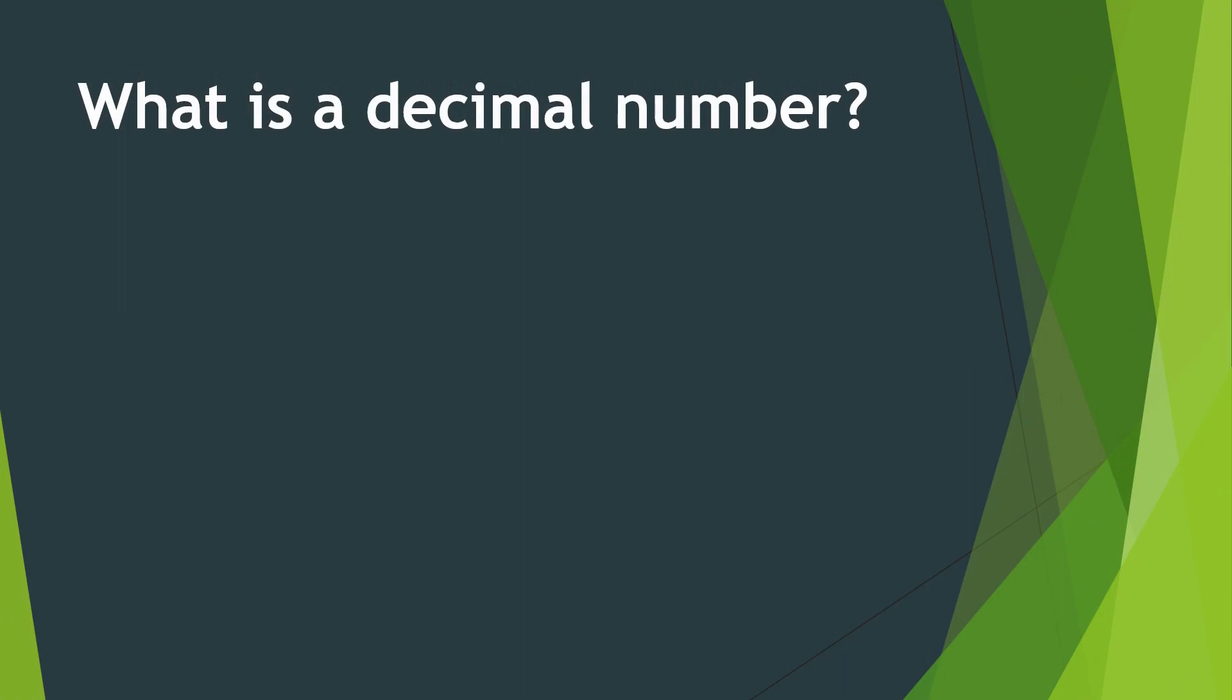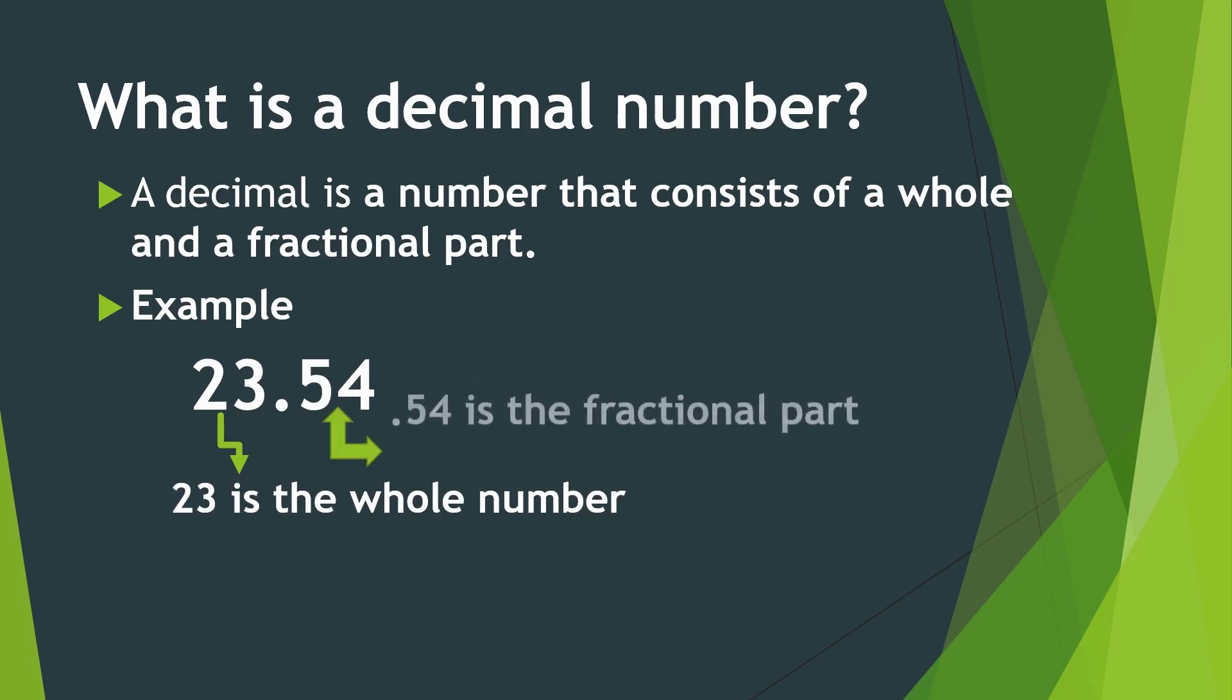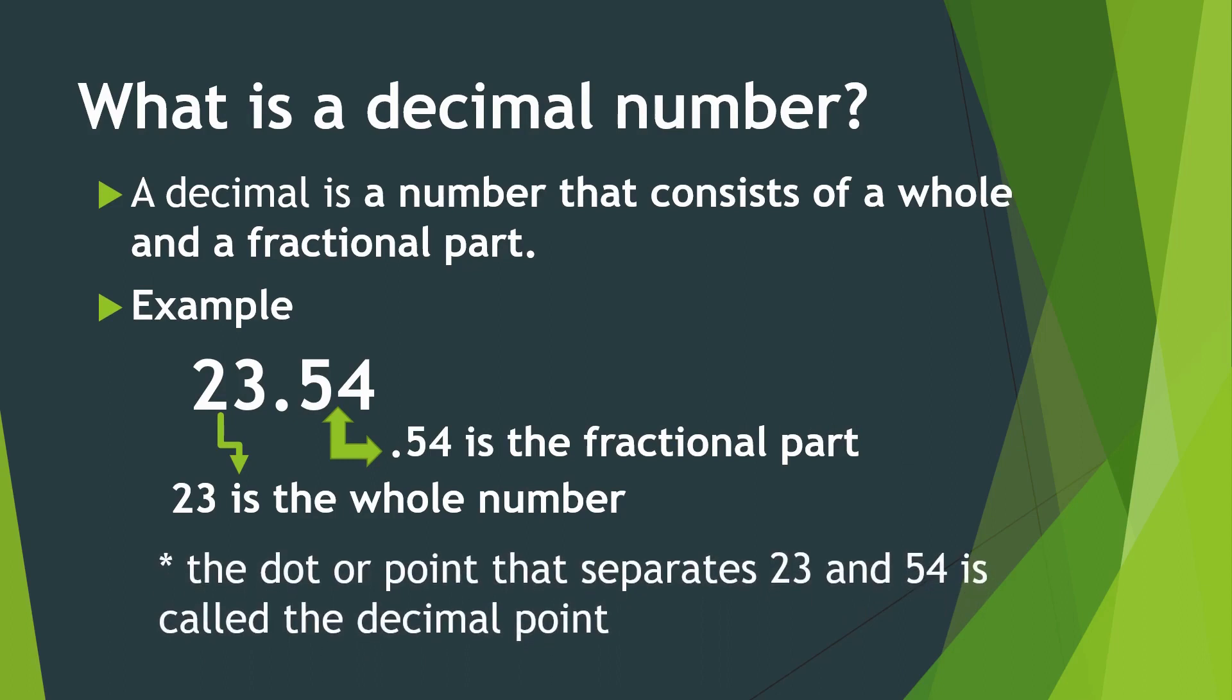What is a decimal number? A decimal is a number that consists of a whole and a fractional part. Example: 23.54. 23 is the whole number and .54 is the fractional part. The dot or point that separates 23 and 54 is called the decimal point.